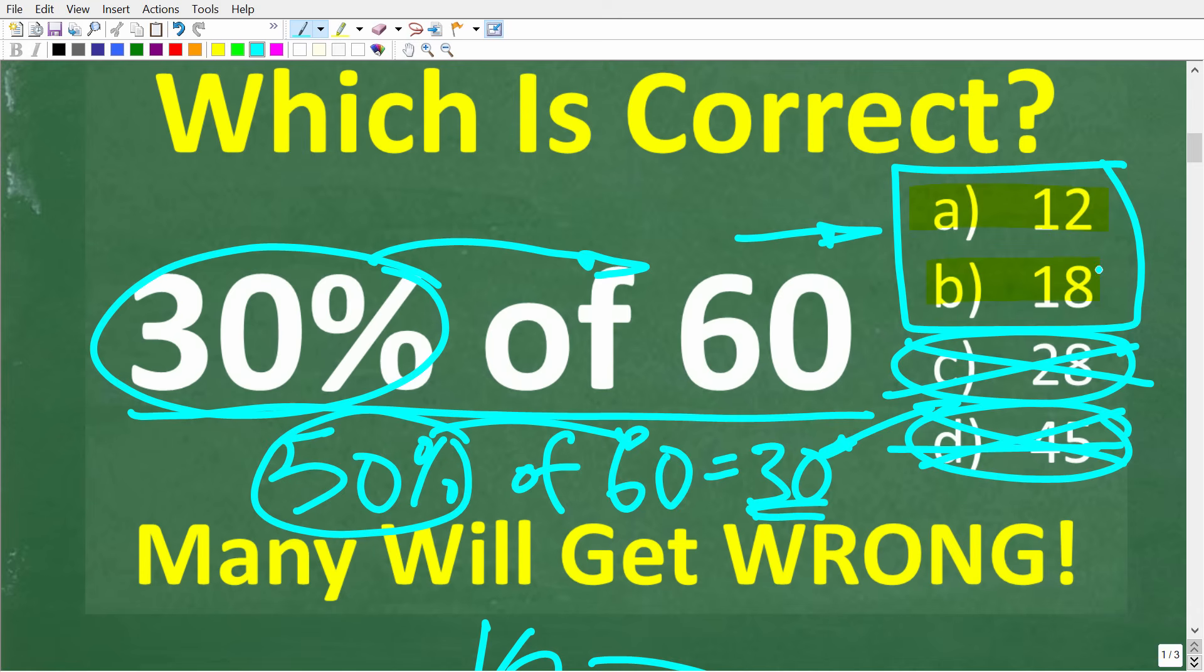All right, so what is the correct answer? Well, the correct answer here is B. All right. Now, if you got this right, I definitely have to give you a nice little happy face and an A plus and a 100% great work. And again, hopefully you did not use a calculator.